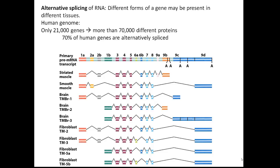When the genome was first sequenced, people were very surprised at how few genes humans have compared to some of the lower organisms that had already been sequenced — only about 21,000 genes. But the difference comes from the fact that there's so much alternative splicing. 70% of human genes are alternatively spliced, and what that means is that there are a whole bunch more possible proteins that can be made than there are genes.